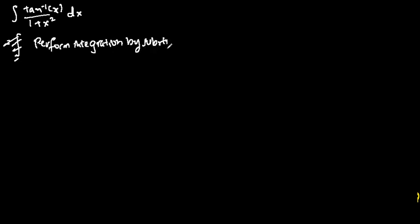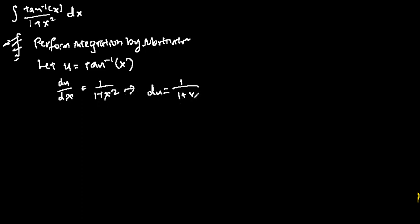So how do we do it? We let u be equivalent to tangent inverse x. And then the differential we expect to add gives us 1 over 1 plus x squared, which means that du is equivalent to 1 over 1 plus x squared dx, and then we substitute into the problem itself.